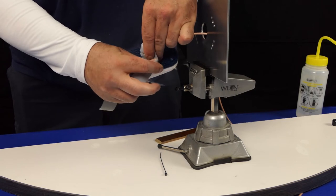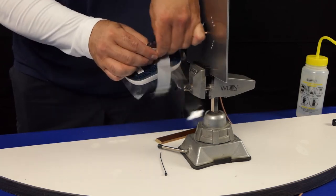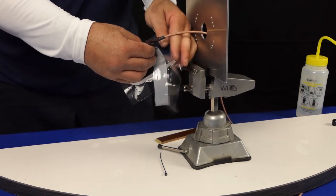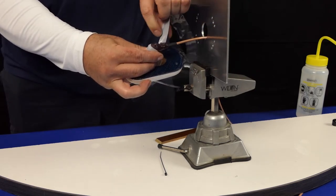Stretch the self-fusing silicone tape 50-300% during application to ensure a tight fit when complete. Stretching the tape will aid in the fusing process.